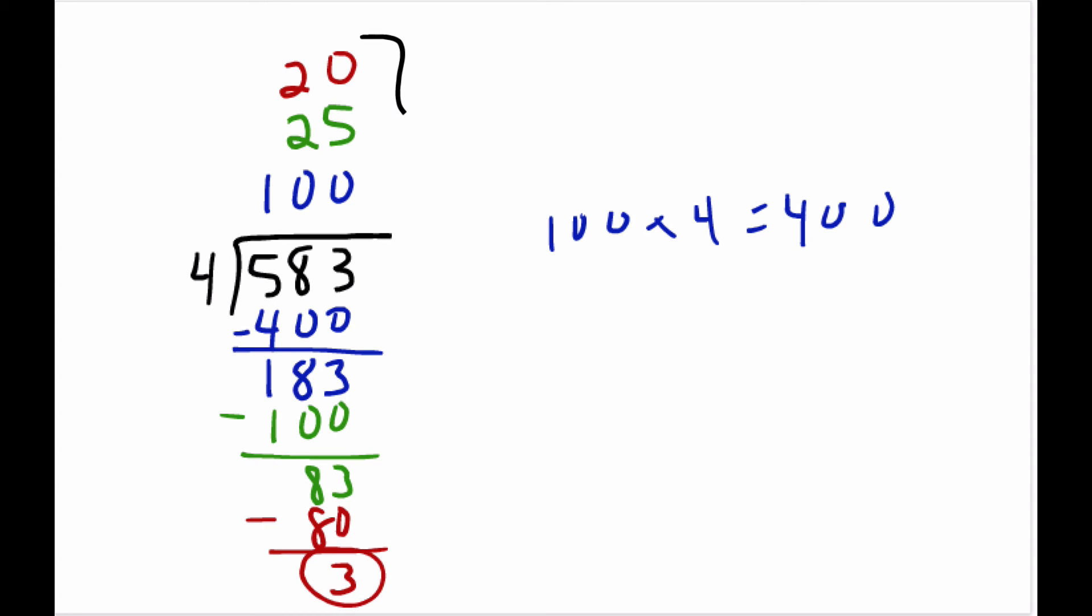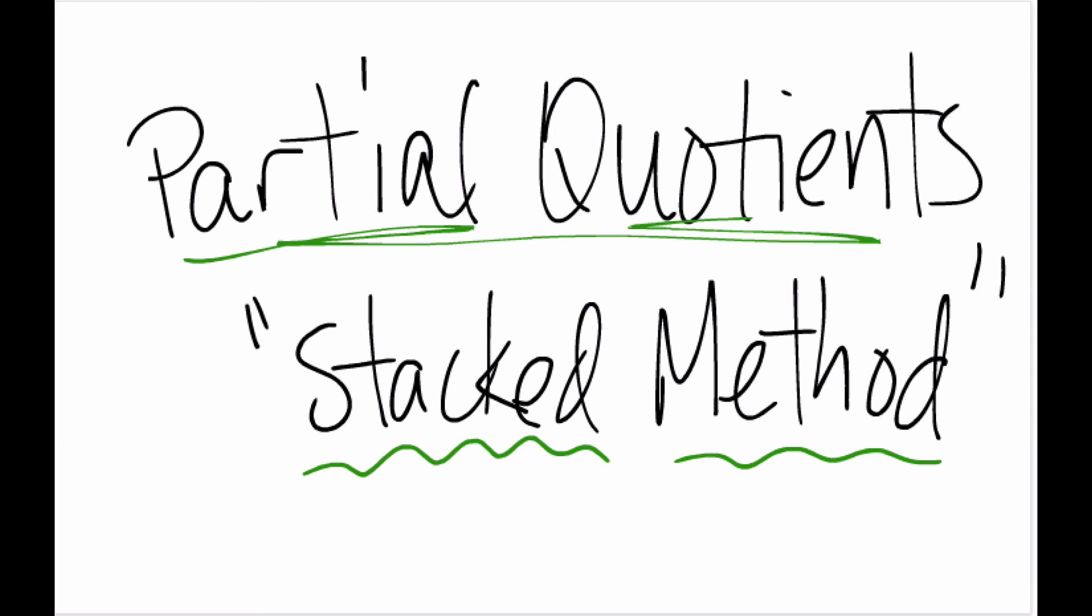So to find our answer here, we add—and I'm going to get this junk out of the way—and we just add these partial quotients together. So 100 plus 25 plus 20 equals 145, and we have a remainder of 3. So that's what I call the partial quotients stacked method.